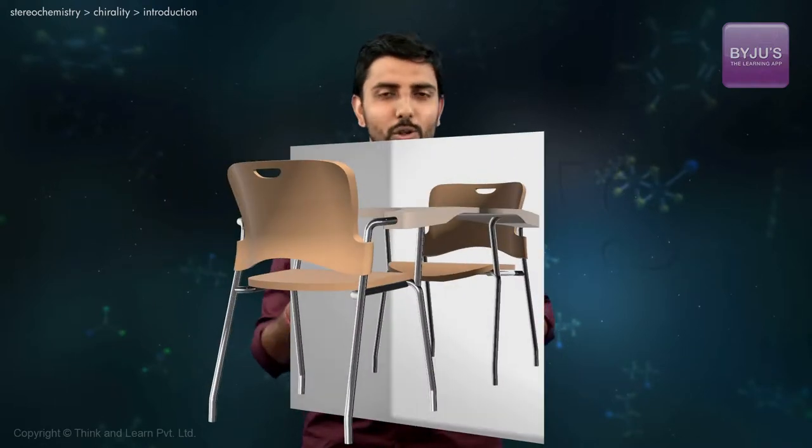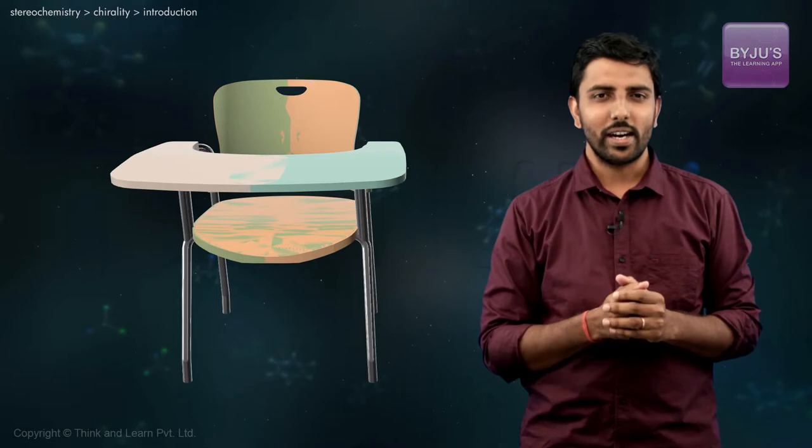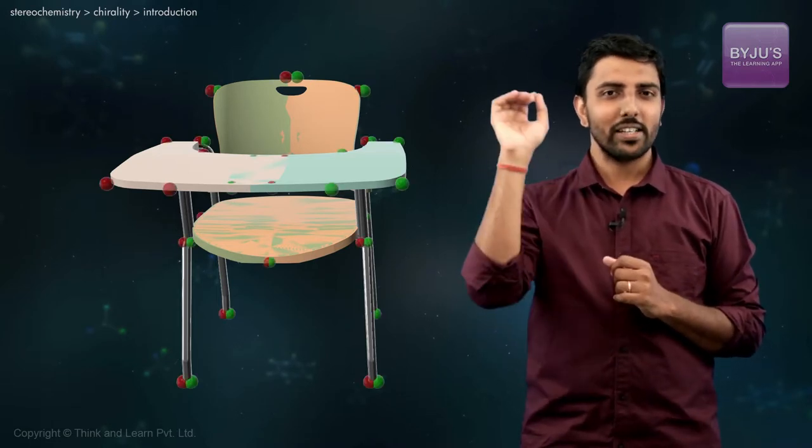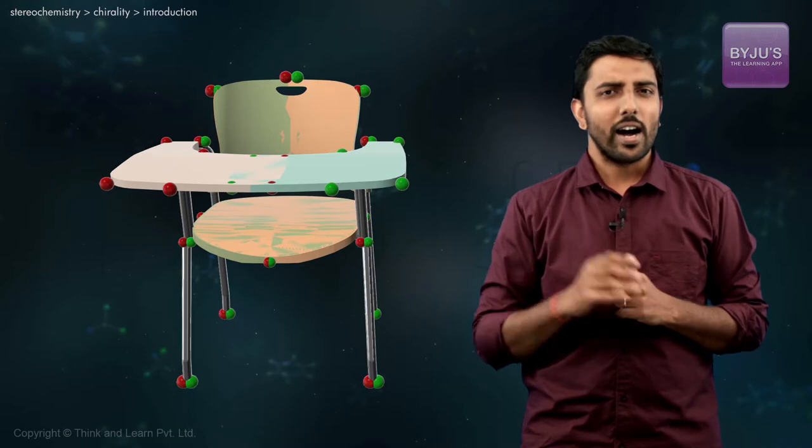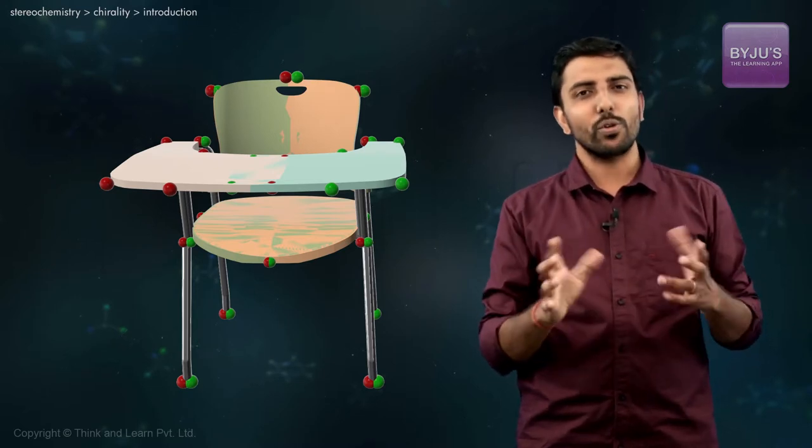We'll repeat the same exercise, this time with a slightly non-symmetrical object. We introduce the same chair but with a quirky difference — a writing pad on the right-hand side. We bring in the mirror, take its image, lift the image, rotate it, and try to slowly lower it and superimpose on top of the original chair. Take a few seconds and see if they are an exact match. Are they able to superimpose on top of each other? Not really, are they?